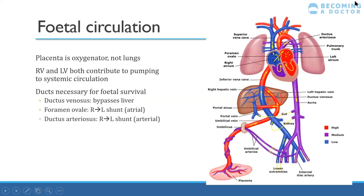This is a nice picture of the fetal circulation. As you'll all know, the placenta supplies pretty much all the oxygen to the fetus — not the lungs. The lungs are really irrelevant at this stage. The right and left ventricle both contribute to pumping to the body because blood bypasses the lungs. The ductus arteriosus shunts the blood so that it doesn't go to the lungs and instead goes into the systemic circulation.